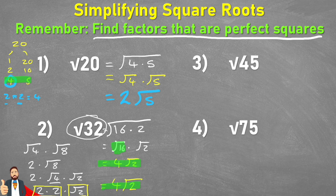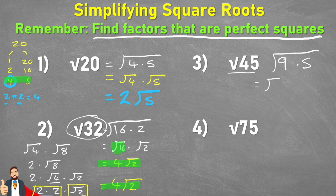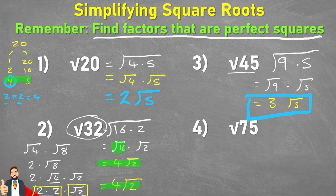Let's look at question 3: the square root of 45. Again I'm looking for factors where one is a perfect square. Without drawing my factor tree I can see that we have 9 times 5. So the square root of 9 times 5 is the same as the square root of 45. Let's separate it to be the square root of 9 multiplied by the square root of 5. The square root of 9 is 3, so therefore it'd be 3 multiplied by the square root of 5.